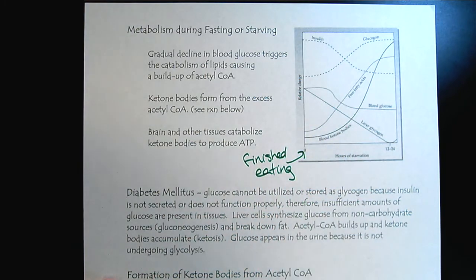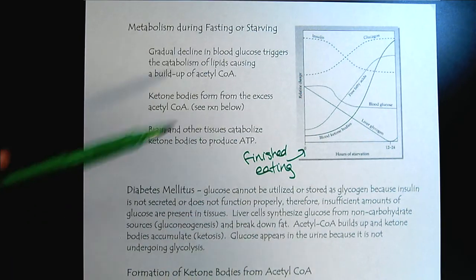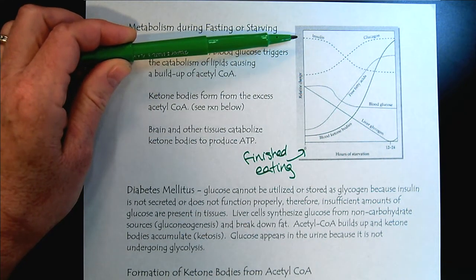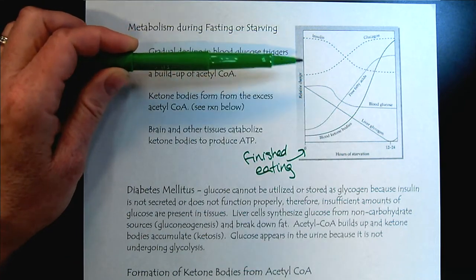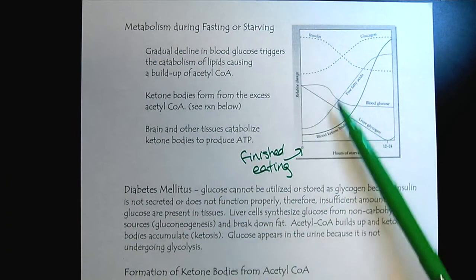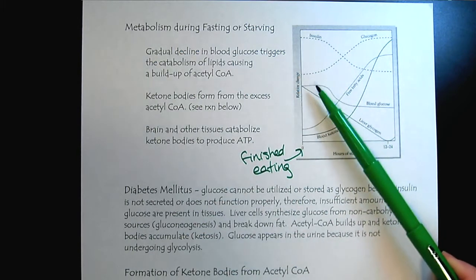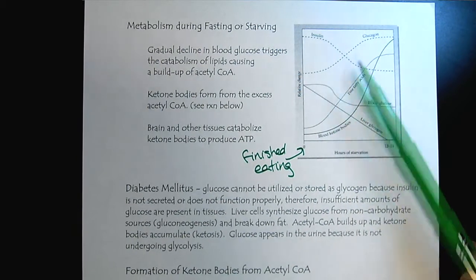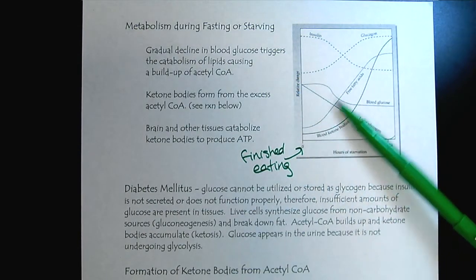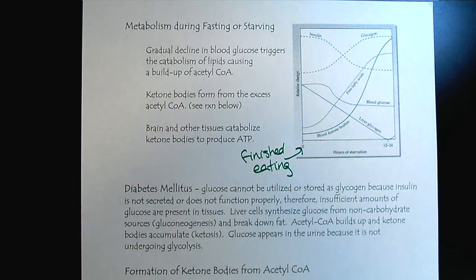When we've just finished eating, insulin is released. Insulin triggers that we will be producing glycogen, and glycolysis occurs as well. So right after we've eaten, we're going to have glycogenesis and glycolysis occurring.